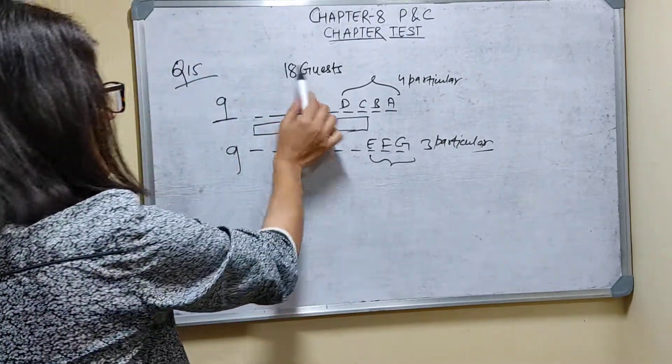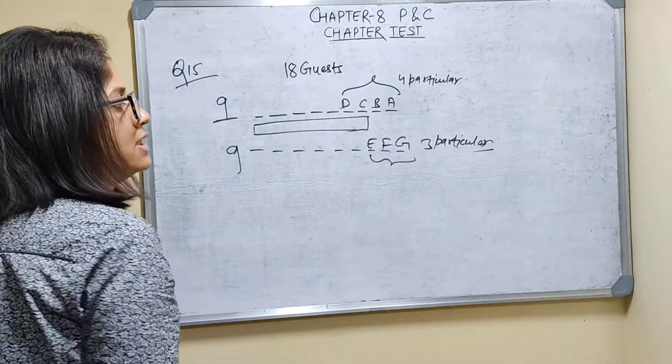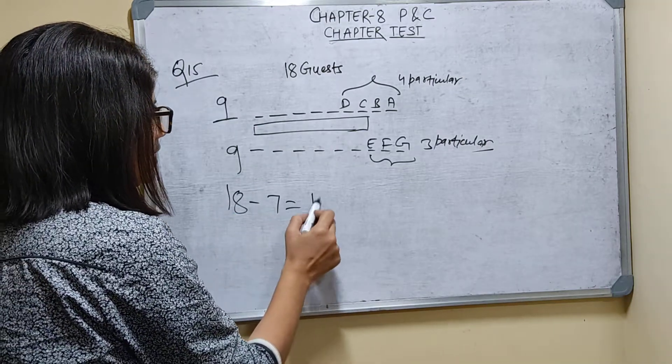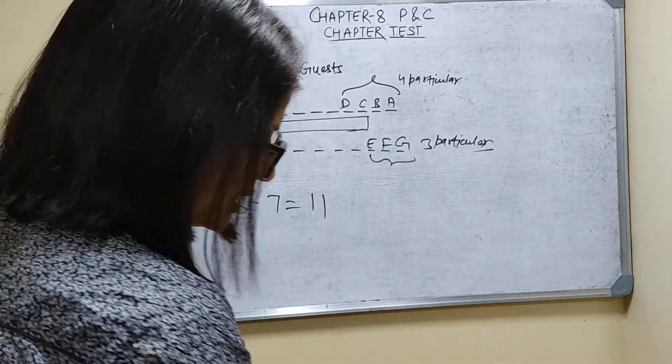And out of 18, 4 will sit this side, 3 will sit this side, so total 18 minus 7, how many are there? 11.